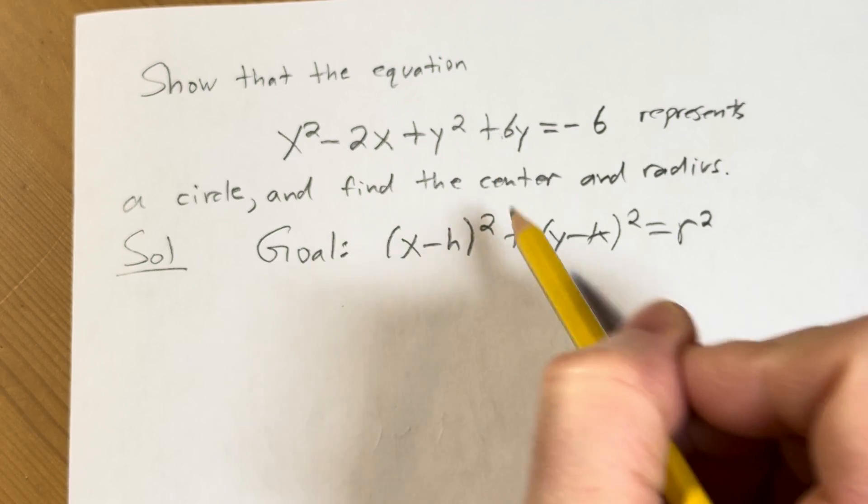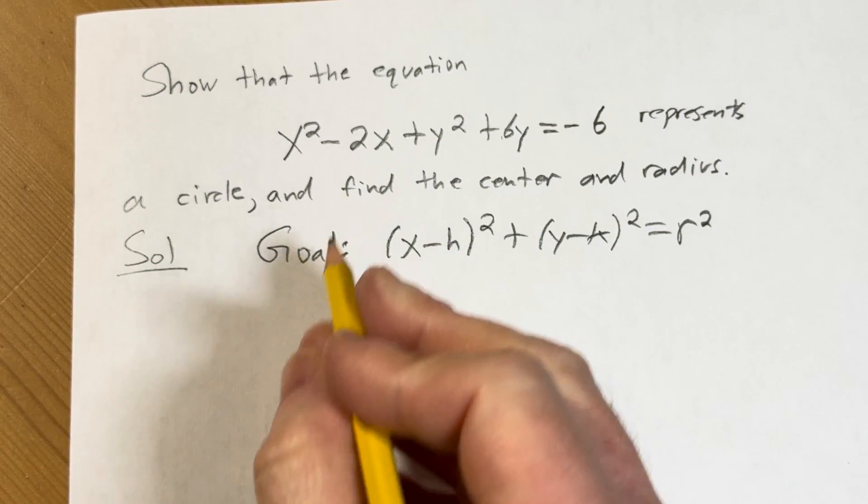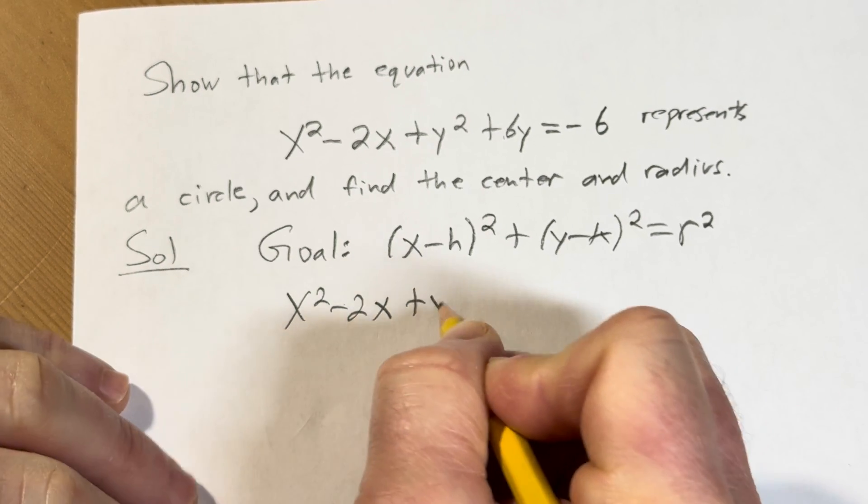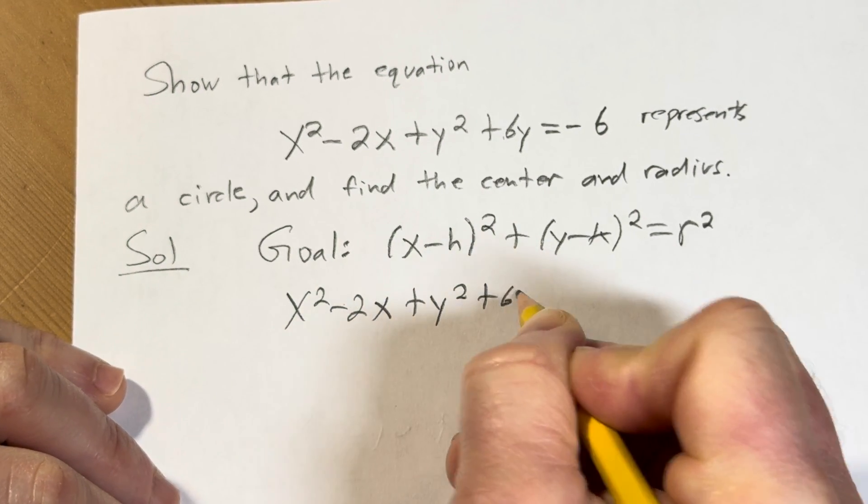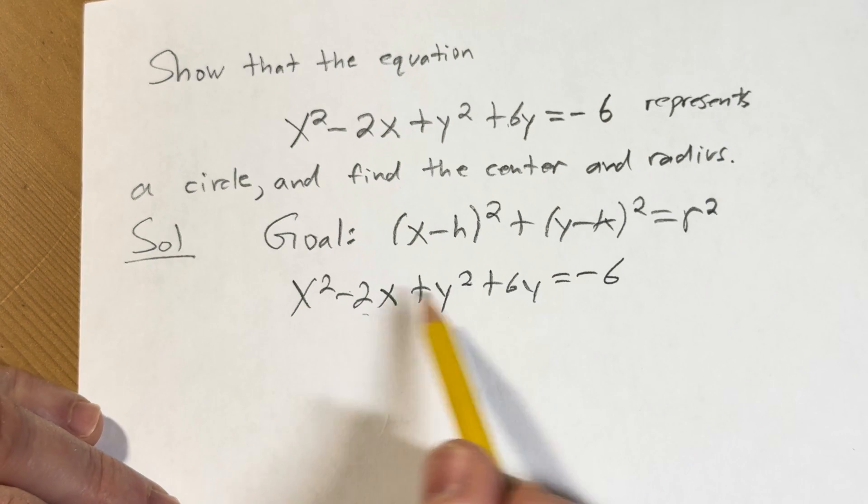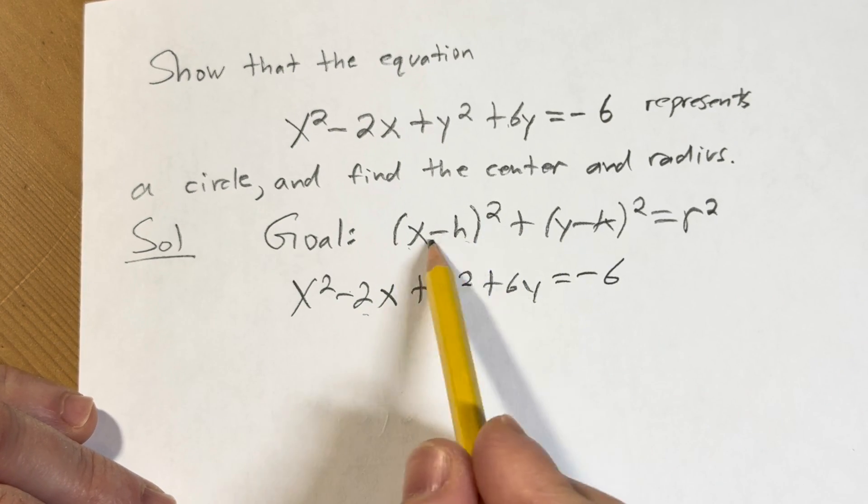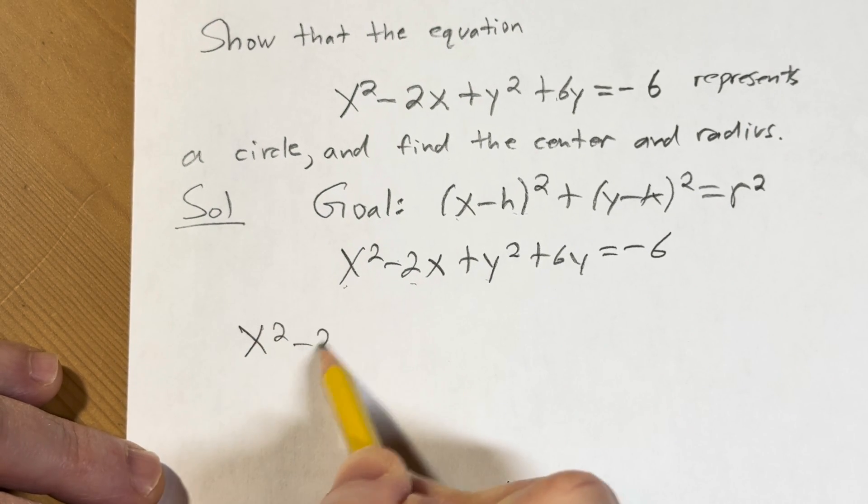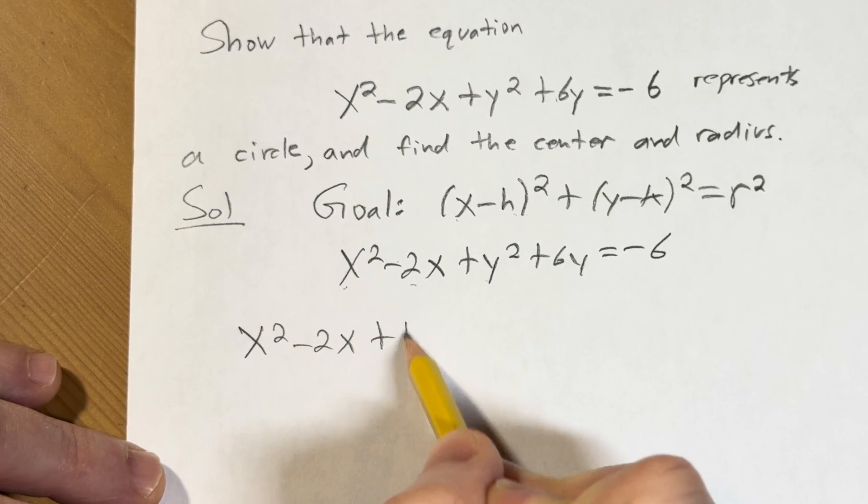So we have to make this look like this. I'm going to take this and write it again just so we have it down here. I'm going to show you what I'm going to do. We're basically going to complete the square two times, once in x and once in y, so that we have these two squared quantities. So let's just do it. We have x squared minus 2x, this is going to be plus 1.